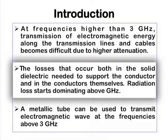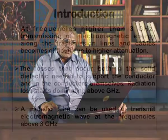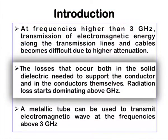The losses that occur in the solid dielectric, which may be used in the coaxial cable between the two conductors, also become very high because at 3 gigahertz, frequencies very rapidly polarize and depolarize the dielectric materials, producing high heat. So these losses become very high, and the coaxial cable and transmission lines are not capable of propagating EM energy at gigahertz frequencies.